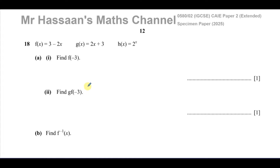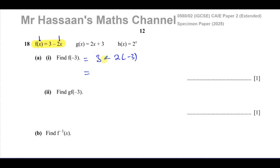This question is about functions and we are asked first to find f(-3). We take the function f, which is 3 minus 2x, and wherever we see x in the function we replace it with -3. So f(-3) is going to be 3 minus 2 times (-3). Be very careful about signs: minus 2 times minus 3 is plus 6. So 3 plus 6 gives us 9. That's the answer to part (a)(i).